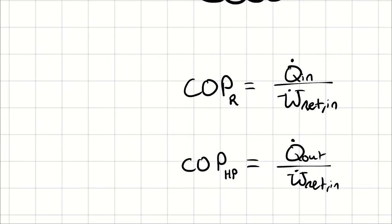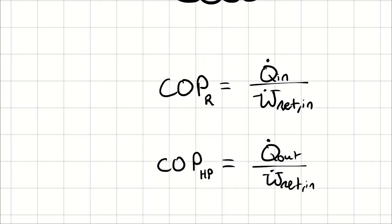When it's operating in cooling mode, subscript R, the desired effect is heat transfer in. Therefore, our relevant performance parameter is heat transfer in divided by the net work in — what we had to put in to make that happen. When it's operating in heating mode, subscript HP for heat pump, our desired effect is heat transfer out. Therefore, our performance parameter is heat transfer out divided by the net work in.